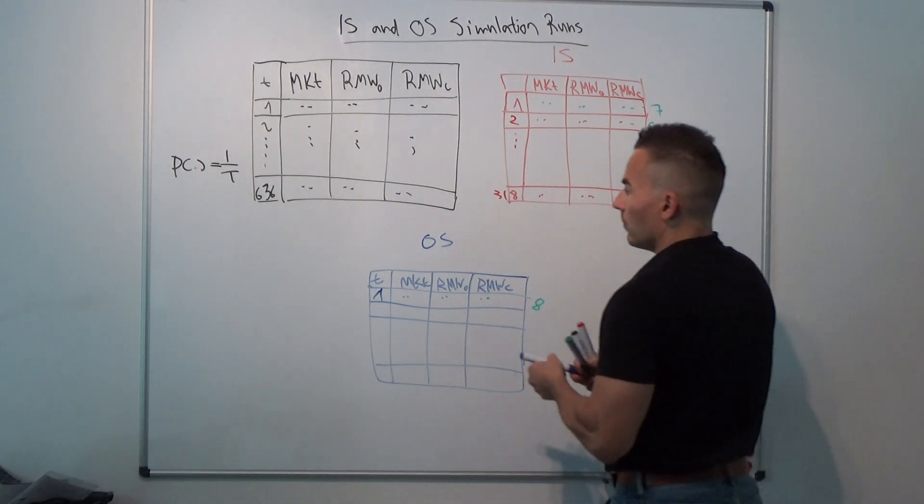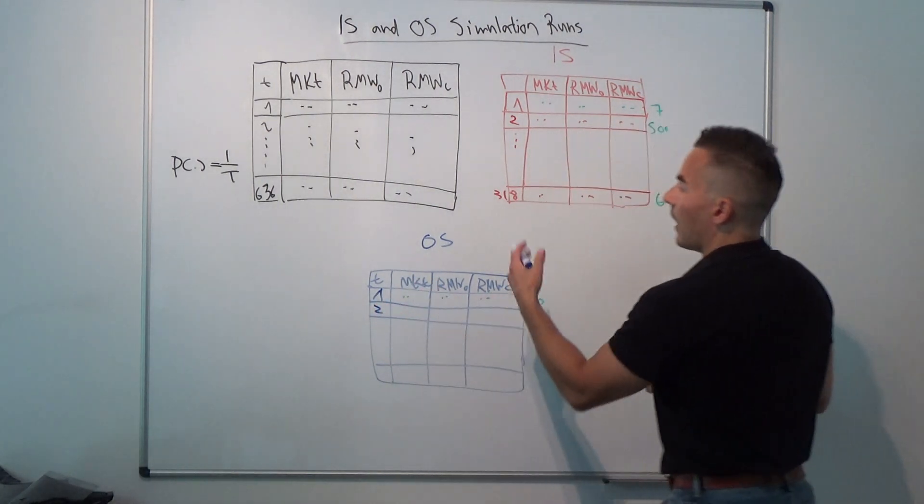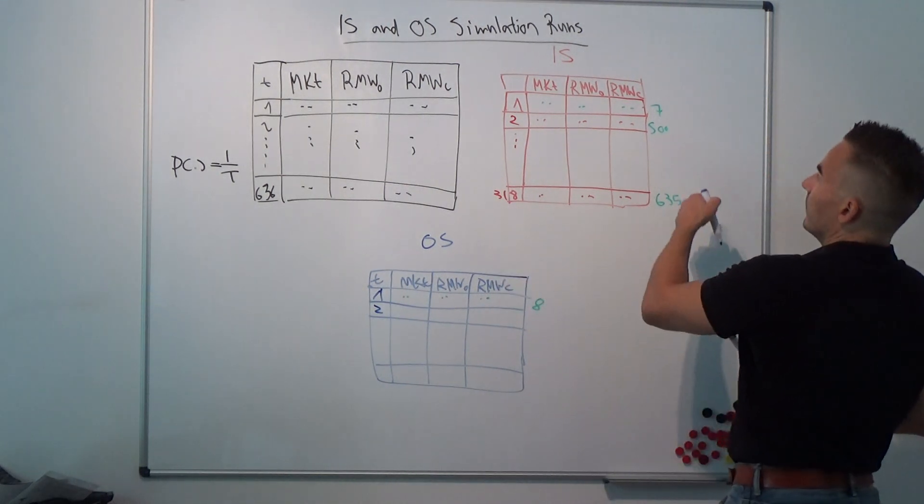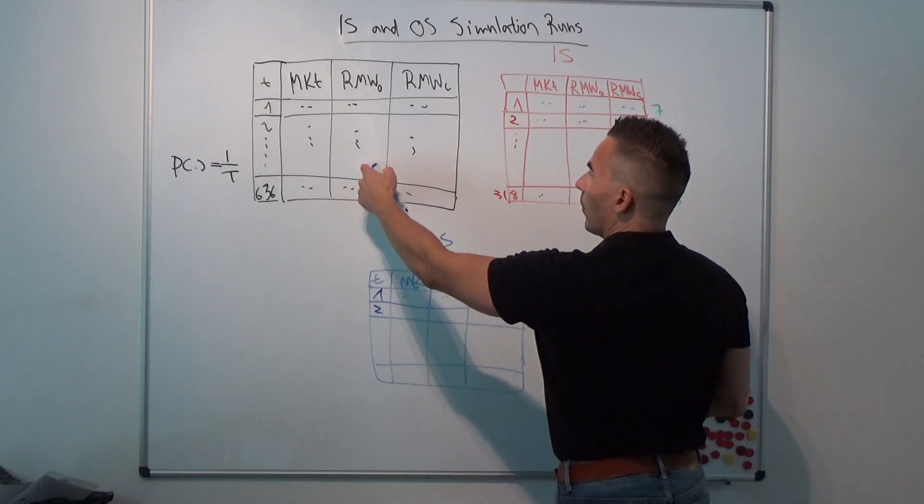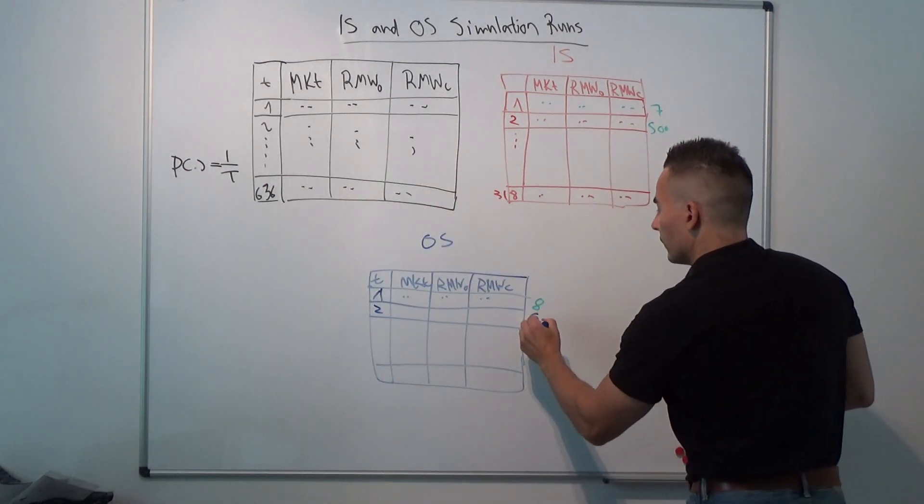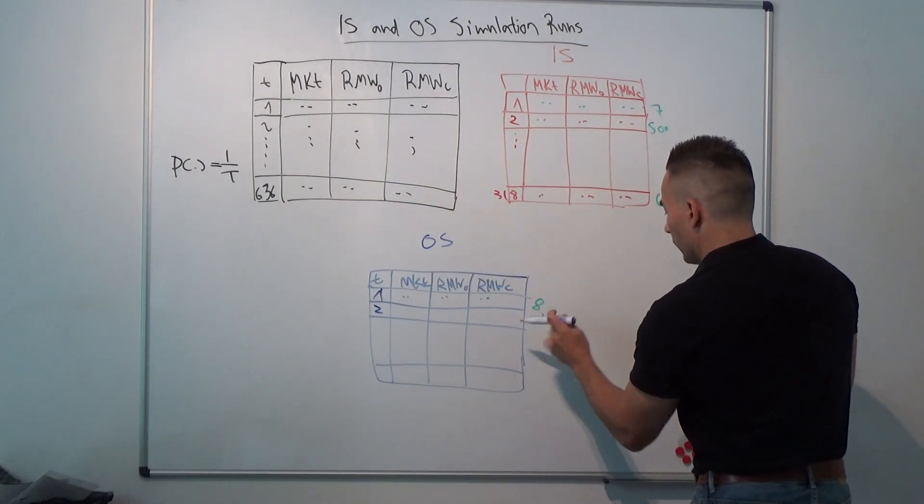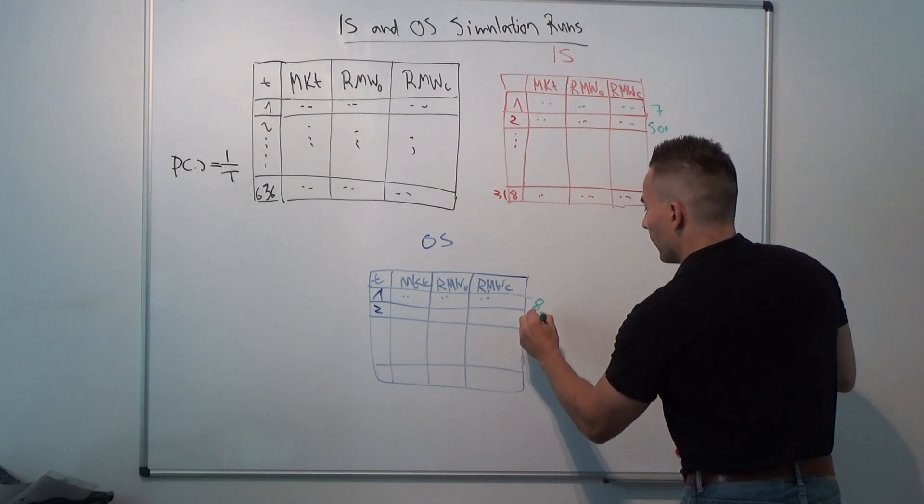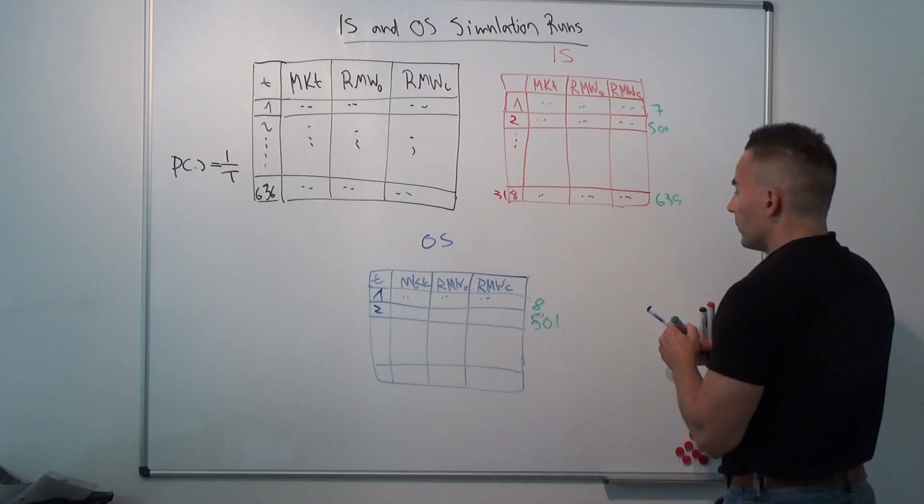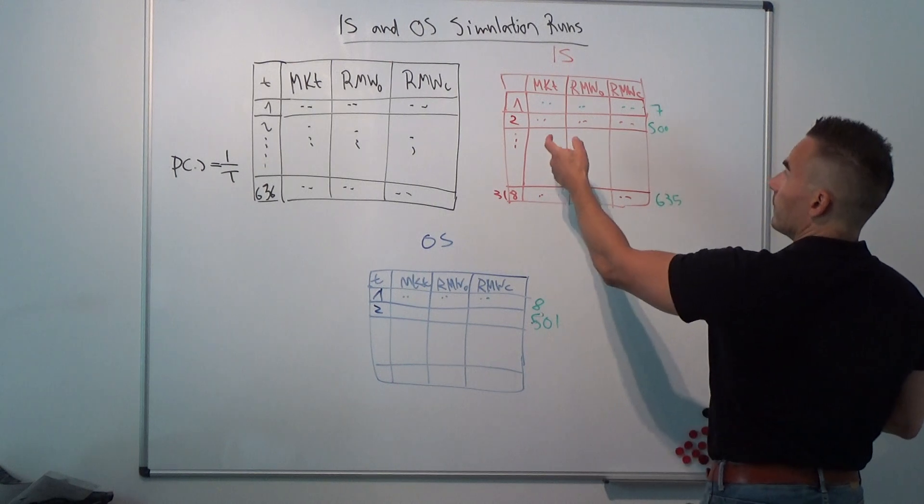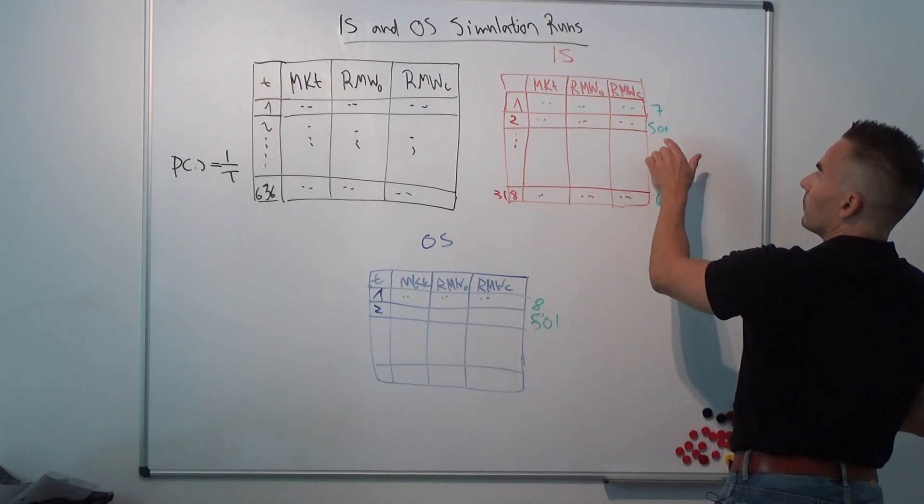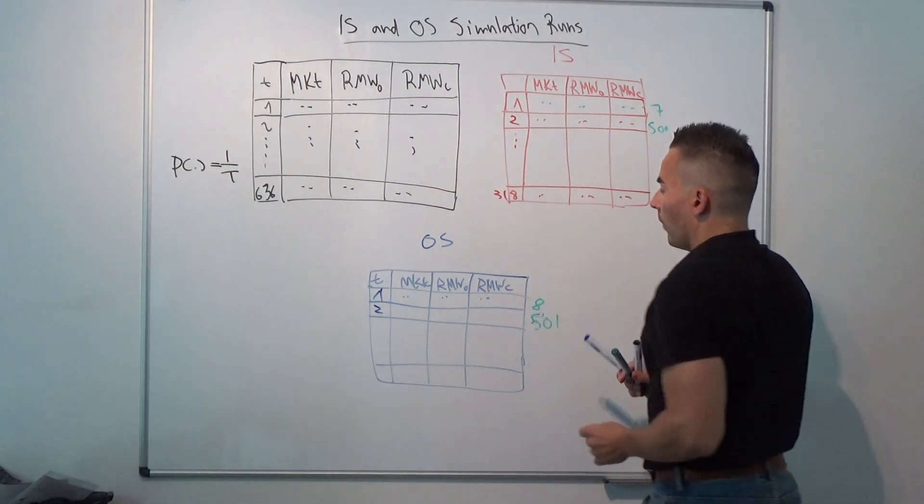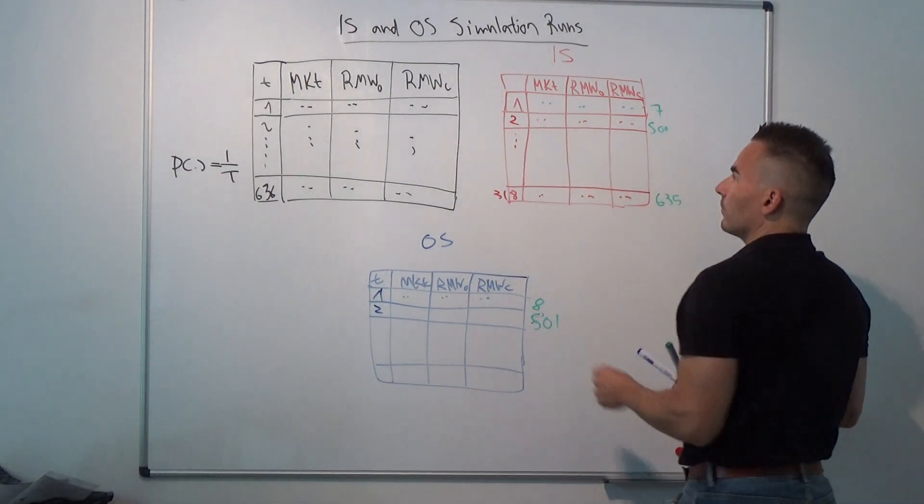So the second row in our out-of-sample matrix must be row number 501 in our original data sample. Let's do it also in green: 501, because the second observation in our simulated in-sample data matrix corresponds to row 500 in the original data sample. We always take the row that follows.